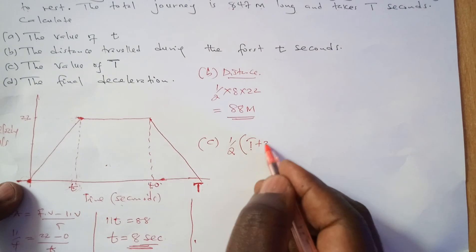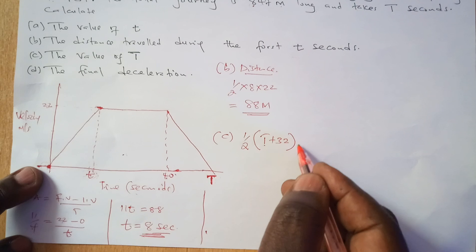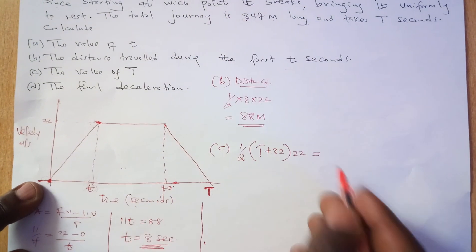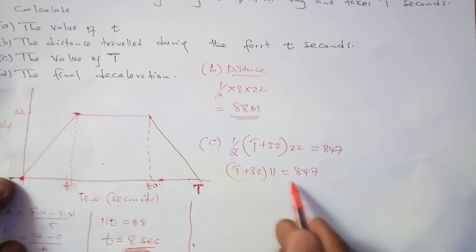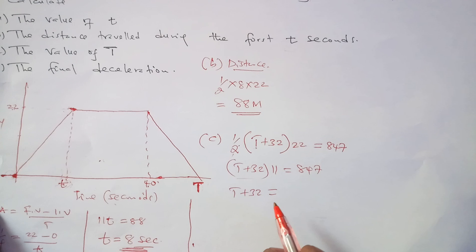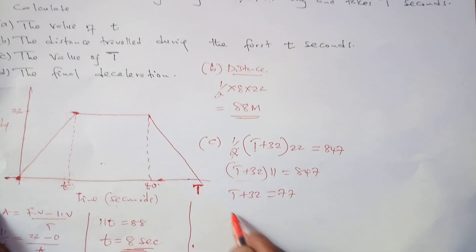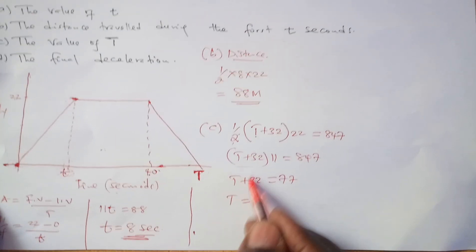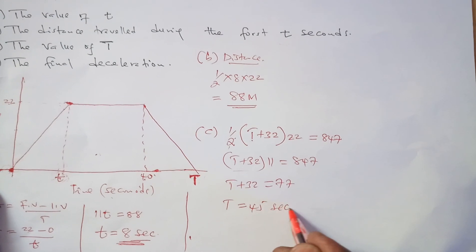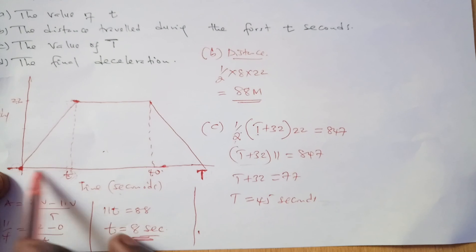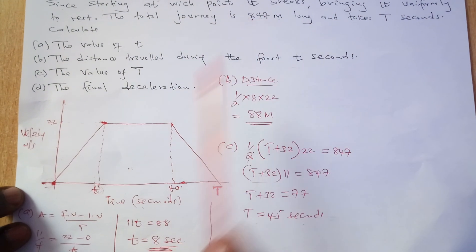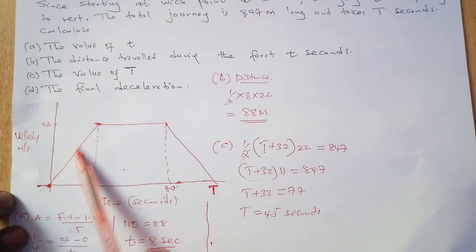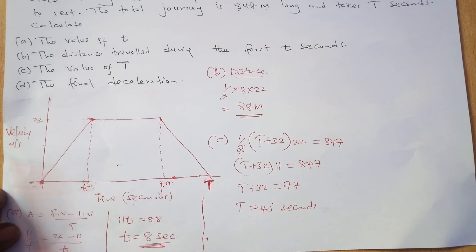Setting up the equation: half times (T plus 32) times 22 equals 847. Simplifying gives 11 times (T plus 32) equals 847, then T plus 32 equals 77, so T equals 77 minus 32, which is 45 seconds. Whenever you are given total distance, use the area under the curve to find whatever value is missing.